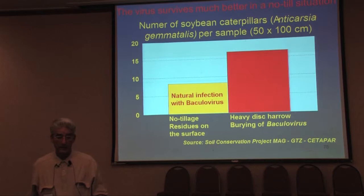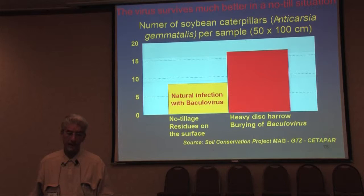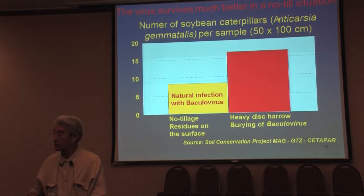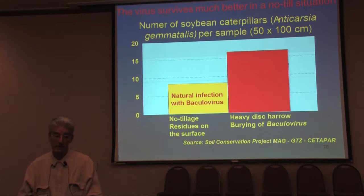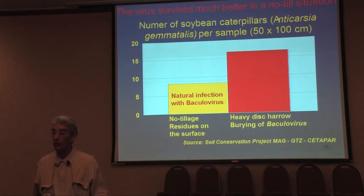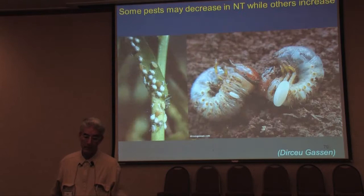In this graph, I'm showing the survival of this virus in a no-till situation compared to a heavy tillage scenario where you would be burying your virus with a tillage implement — so it's not going to reseed the next season. While in no-tillage, you have natural infection with Baculovirus, so you have a lower quantity of these caterpillars in the next season.